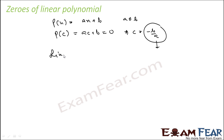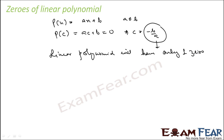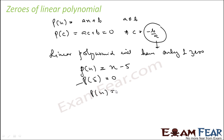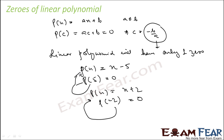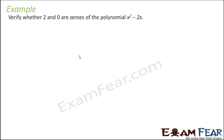So a linear polynomial will have only one zero. For example, if p(x) = x minus 5, then 5 is the only zero for this polynomial. If p(x) = x plus 2, then minus 2 is the only zero for this polynomial. A linear polynomial will have only one zero.